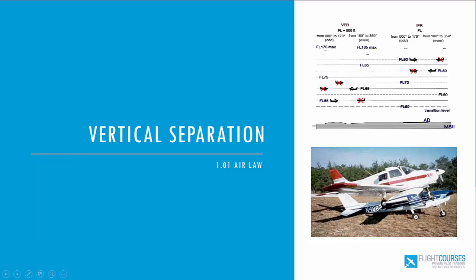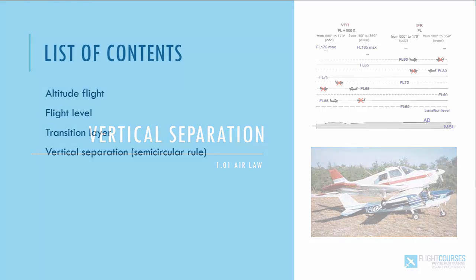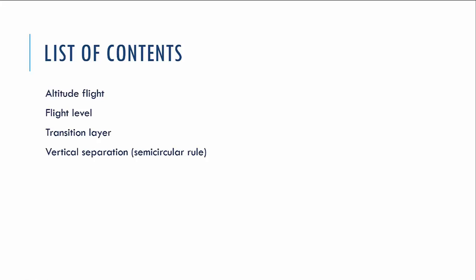Hi there! Nice to meet you here again. In this video we are going to talk about the vertical separation, the set of rules of the aviation law which are defined to safely separate VFR and IFR aviation traffic in the air. Particularly, we will talk about altitude flights, flights with flight level, the transition layer, and the rules for vertical separation of traffic for VFR and IFR flights — the so-called semicircular rule.